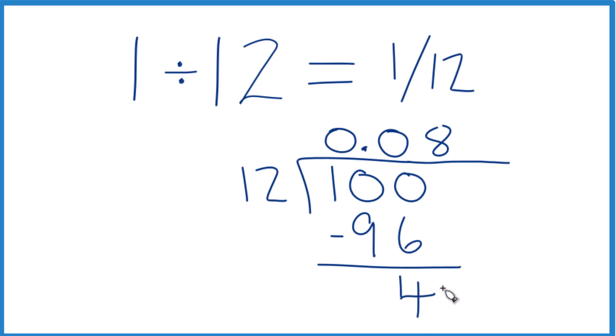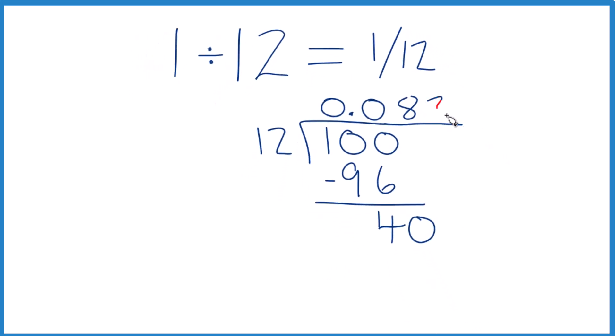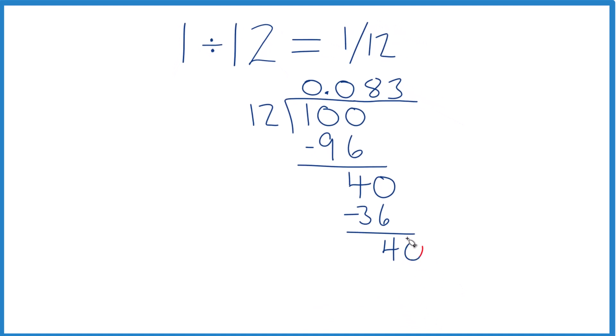It doesn't go into 4. We could call it 40 if we move over 1 here. So 3 times 12, that's 36. Subtract, we get 4. Call it 40. Move over 1. 3 times 12, that's 36. Subtract, we get 4. Call it 40. And you can see what happens.